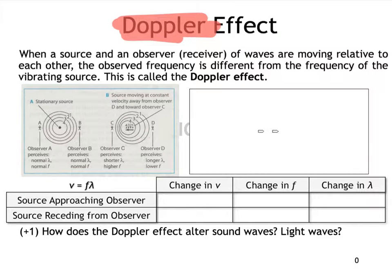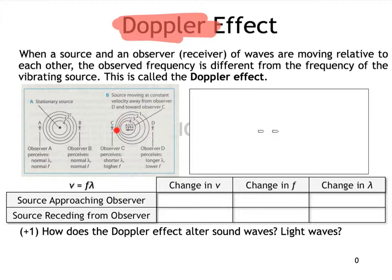The Doppler effect is the scenario where the source of the wavefronts is moving — let's say towards person C. You see positions one, two, three, four. At position one it sends out a wavefront, and at position four it sends out a newer wavefront. The wavefronts get bunched up in the direction the source is moving, so the person observing at C is observing a much higher frequency of wavefronts than the person observing at D. That's the Doppler effect.